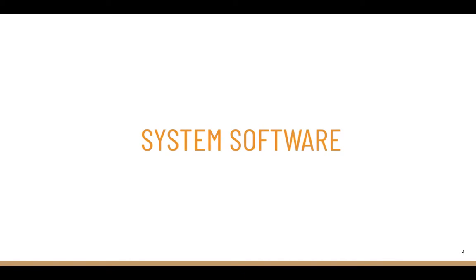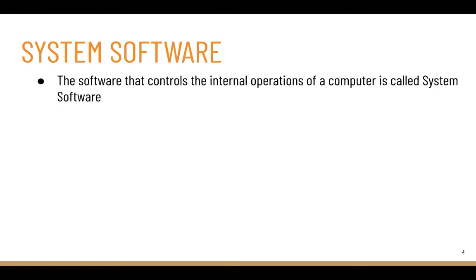A computer is a mere machine that knows nothing of itself — each and every instruction should be given to the computer, and these instructions are provided with the help of software. System software is such a software that controls the internal operations of a computer. It basically interacts with the hardware so that you can run all other programs and application softwares over it.